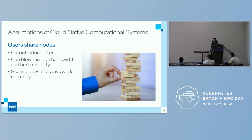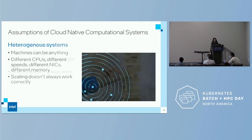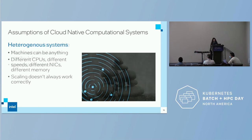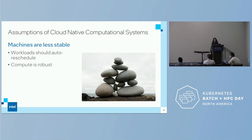Users share nodes. This introduces jitter, blows through your bandwidth, hurts reliability, and scaling doesn't always work correctly. Cloud systems are also heterogeneous — your machines can be anything: different CPUs, different speeds, different NICs, different memory, and they all behave differently. The machines are less stable, which means workloads are sometimes assumed to be able to auto-reschedule, and compute is considered to be robust instead of the hardware.